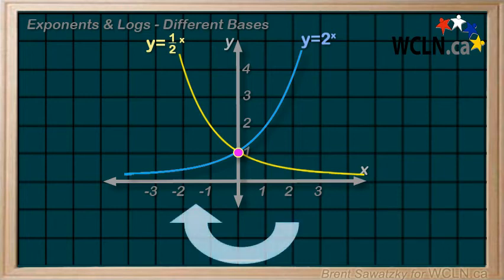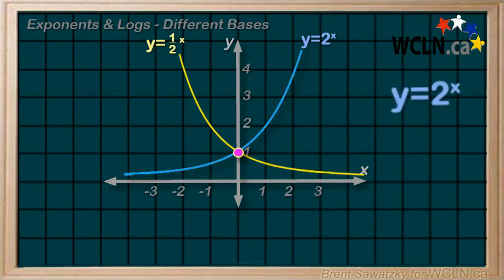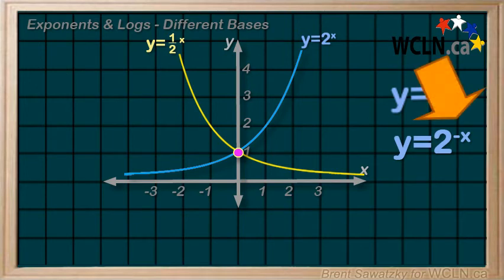And we think back to horizontal reflections. Y equals 1 half to the x is a horizontal reflection of y equals 2 to the x. Thinking back to reflections, a horizontal reflection happens when x becomes negative x. If x, the exponent in this case, is switched to negative x.